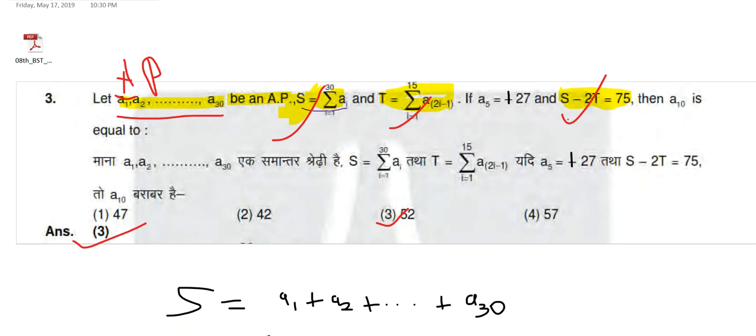With this we can fetch directly d equal to 5. Now whatever the question asks, we can write. We will get d equal to 5 and with this we will get a1. Now we can write a10, and a10 will be 52.